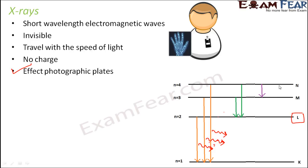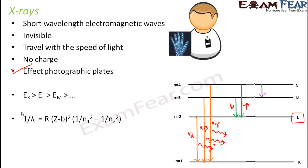The lines are named as follows: the transition from L to K is called K-alpha, the next is K-beta, then K-gamma, and so on. The first line of the L series is L-alpha, the second is L-beta, and so on. Looking at the energy level diagram, energy at K is greater than L, which is greater than M. The characteristic wavelength is calculated using: 1/λ = R(Z − b)²(1/n₁² − 1/n₂²), where b is a constant, showing that wavelength depends on the nature of the target material.